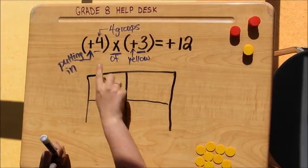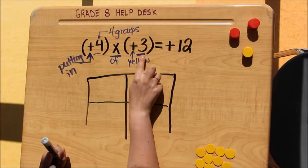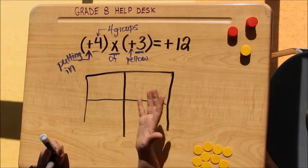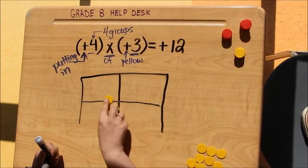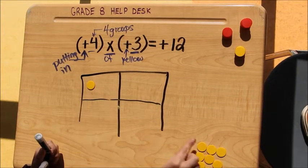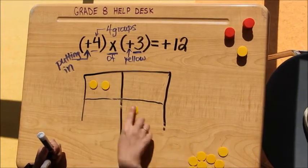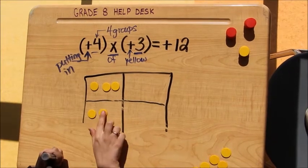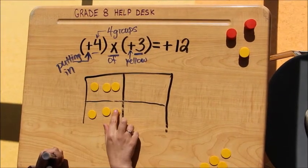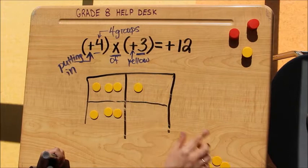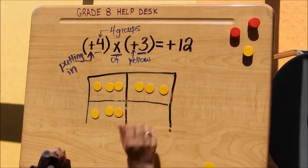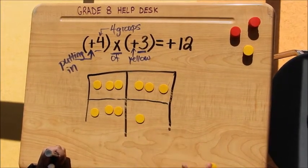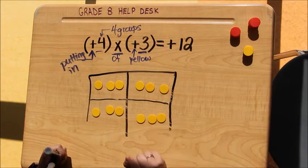And in each of these four sections I need to put three of the positive or the yellow tiles. So in my first group I put one, two, three tiles. In my second group, one, two, three of the positive tiles. One, two, three positive tiles. One, two, three positive tiles.